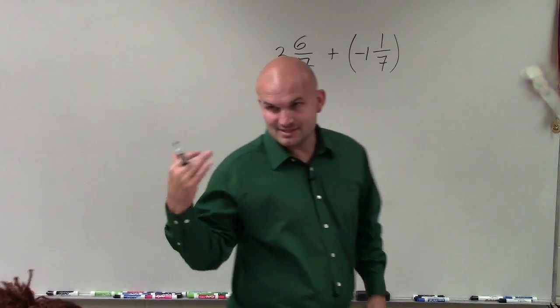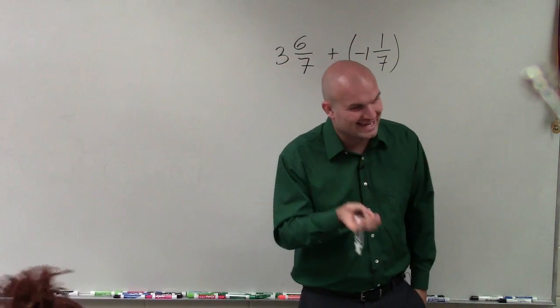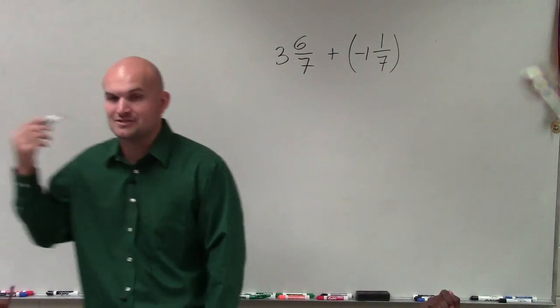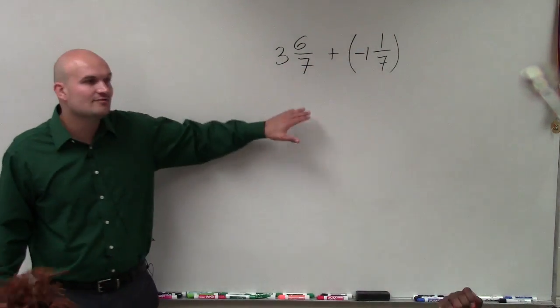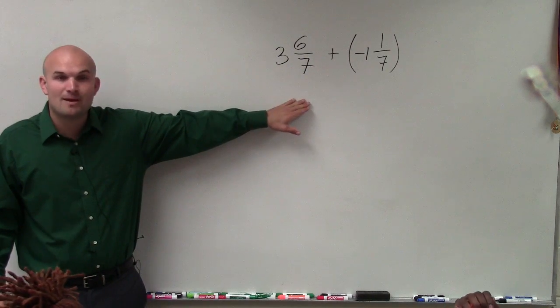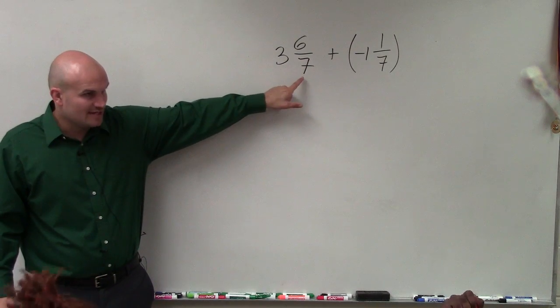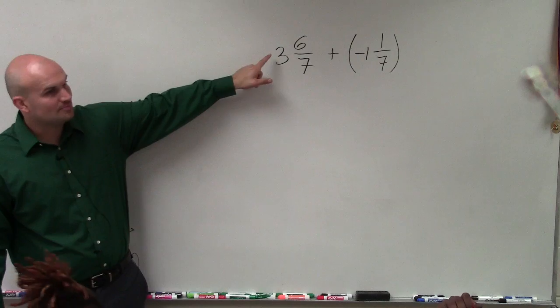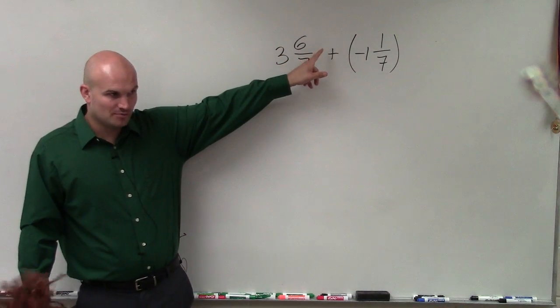So as far as writing this stuff down, this might be very helpful because I'll say it a couple times for you guys to remember it. When converting a mixed number to an improper fraction, you take your denominator, multiply it by the whole number, and then add the numerator.